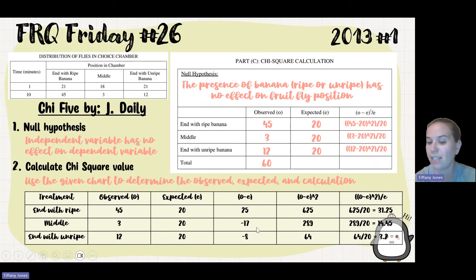3 minus 20 gives me negative 17 squared, gives me 289 divided by 20, gives me 14.45. 12 minus 20 gives me negative 8 squared, gives me 64 divided by 20, gives me 3.2. And if I add all those together, I get 48.9. Whoa, that's a big chi-square number.